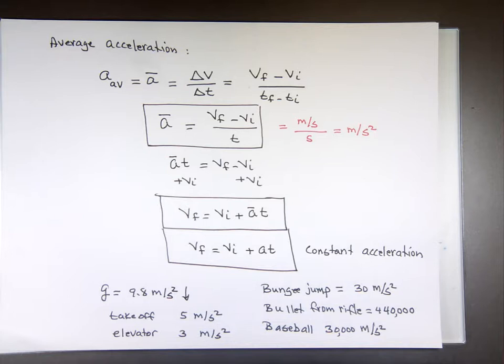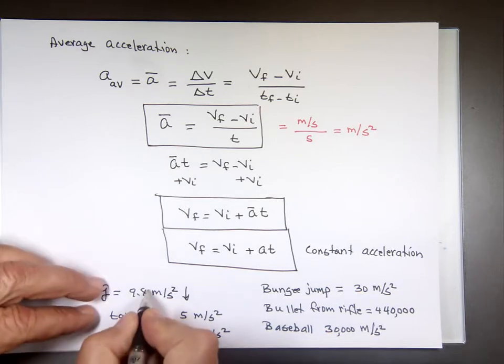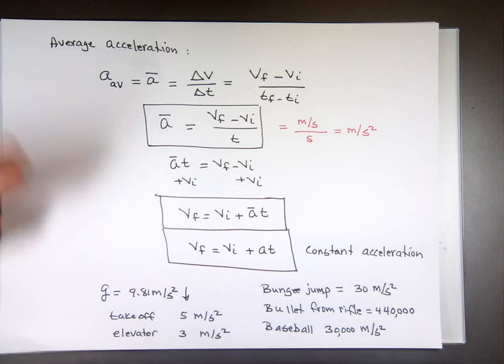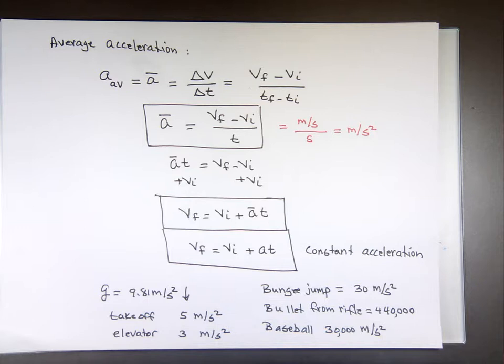So gravity is about 9.81. Elevator is much less than that. Takeoff in a plane is a little bit less — about five. But when you start getting into other scenarios, the numbers can be very high.